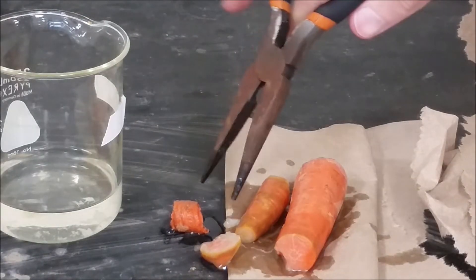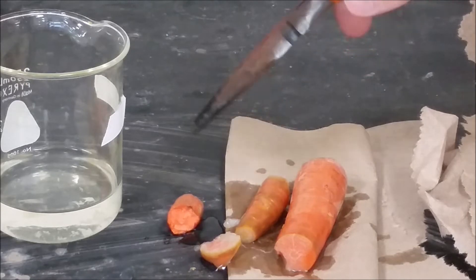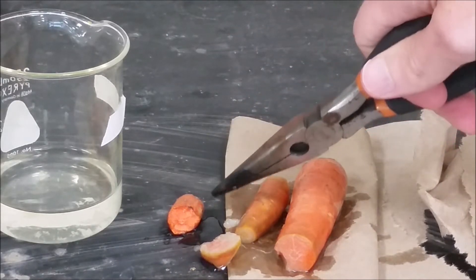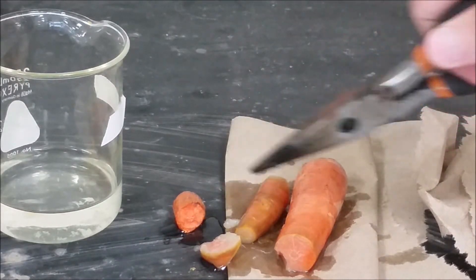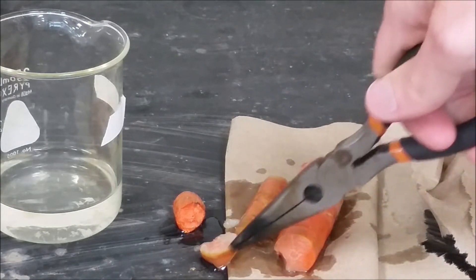So this is the piece of carrot that was left out, not in contact with any bromine. You can see the definite color difference here, the orange between that and this or this or this.